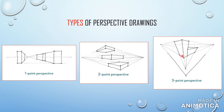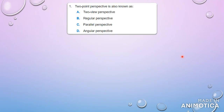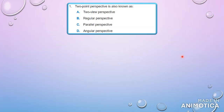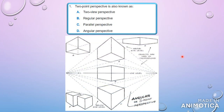The first question asks: two-point perspective is also known as what? As I showed earlier, two-point perspective is also called angular perspective, because the object is viewed at various angles. You may hear the name angular perspective used — they are talking about two-point perspective.